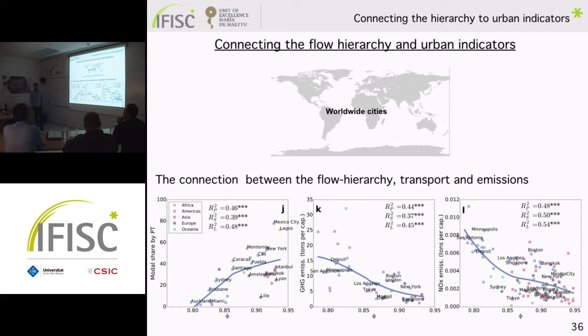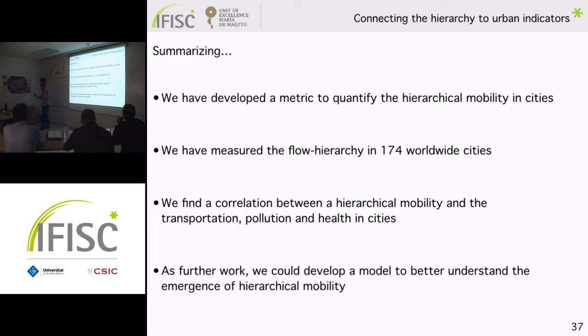We tried to extend these correlations to the worldwide scale and were able to do so for public transportation and emissions. Unfortunately, there is no homogeneous gathering of urban health indicators at a worldwide scale, so we were not able to extend the full picture globally. To close this part: I have proposed a metric to measure hierarchical mobility, shown how it differs across cities, and shown it is correlated with transportation mode share, pollution, and health. The next step would be to develop a model to understand how these hierarchies emerge.